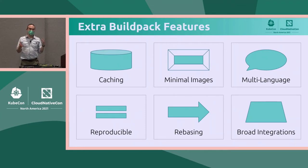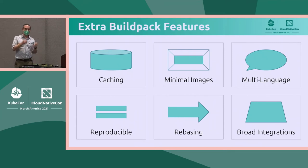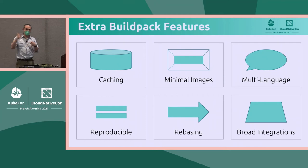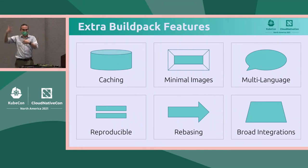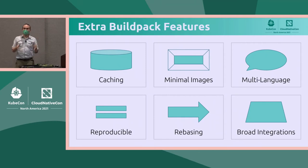They've thought about things like caching. When you're building a Dockerfile, you may think: I want to copy in my package.json first, then run the npm command to fetch all my dependencies, and then copy in the rest of the code. So if I change any code that's not my package.json or package-lock, I only have to do the build steps after fetching my dependency — I don't have to go back and fetch dependencies again.